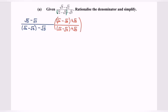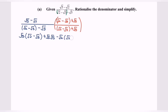Now kindly expand the numerator: square root of 5 multiplied with square root of 2 minus square root of 3, followed by plus square root of 5 multiplied with square root of 5, followed by negative square root of 2 multiplied with square root of 5.